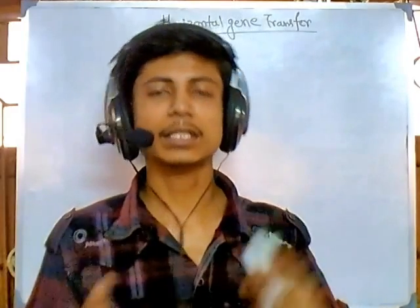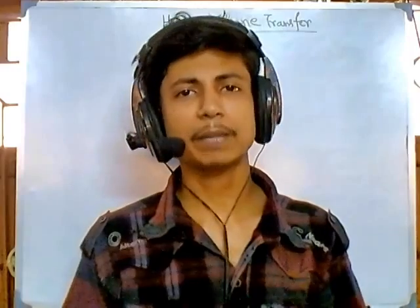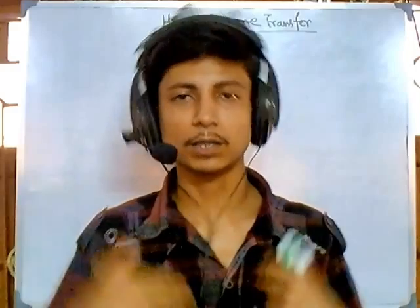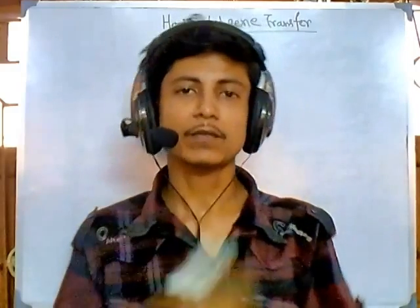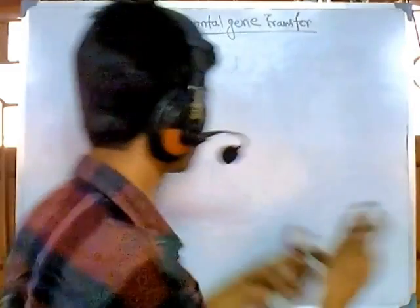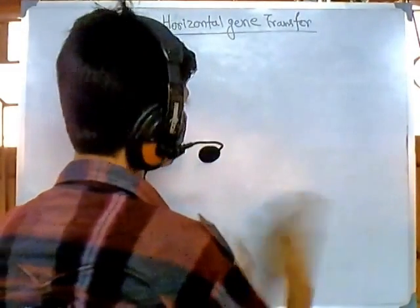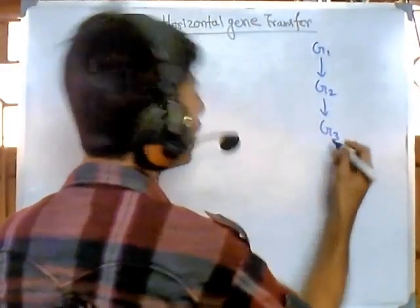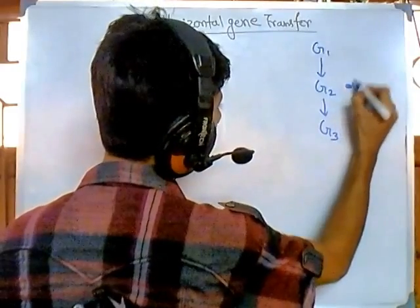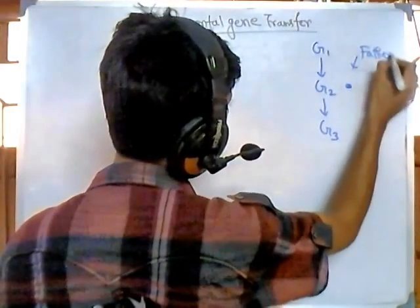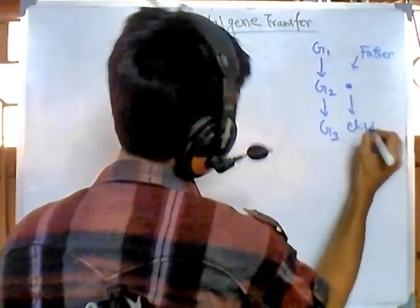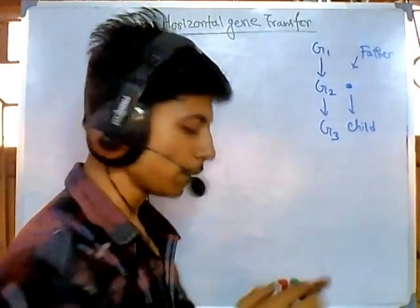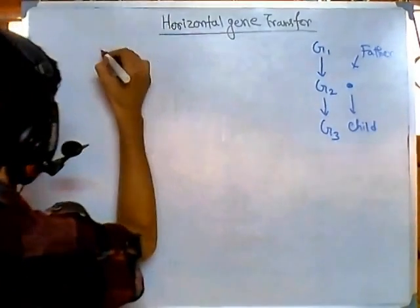Horizontal gene transfer is not the typical type of gene transfer we usually see. Normally, genes are transferred from father or mother to us — from one generation to another generation. So from generation one to generation two, to generation three. I get genes from my father or mother and give them to my child. This is normal gene transfer, also called vertical gene transfer.